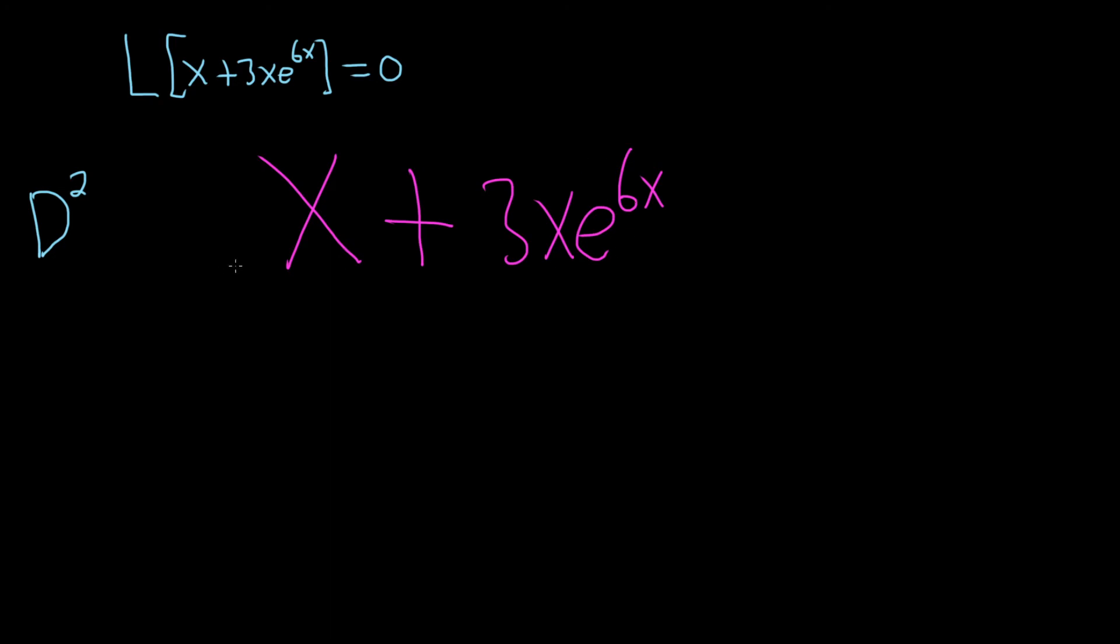As far as getting rid of this one, well, if you had just e to the 6x, say you had just this, then in this case, you can just use d minus 6. But when you put an x there in front of it, what happens is you have to take d minus 6 and you have to square it.